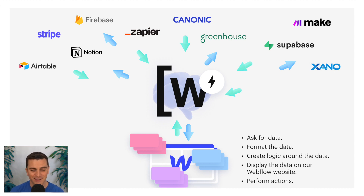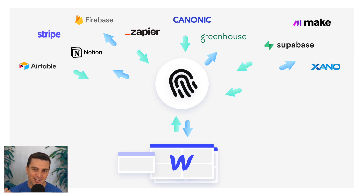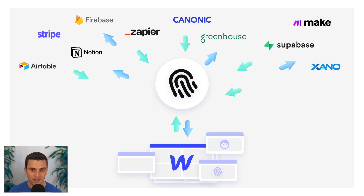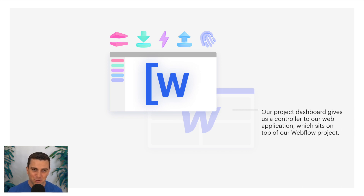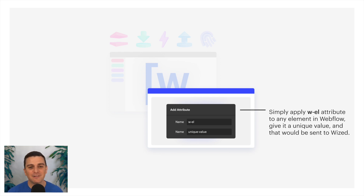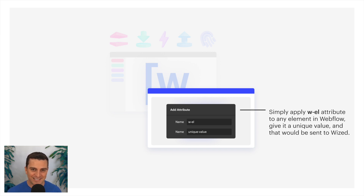While communicating, we can authenticate users, choose which content an authenticated user sees — like gated content — and display individual user content like someone's account details. Wizd groups all of these functionalities into one single UI. The Wizd configurator gives us a controller to our web application, which sits on top of a Webflow project. Integration with elements in Webflow is very easy — we use FinSuite's trusted attribute strategy. Simply apply WL to any element in Webflow, give it a unique value, and that element will be sent to Wizd. One custom attribute sends elements from our Webflow project to our Wizd configurator.